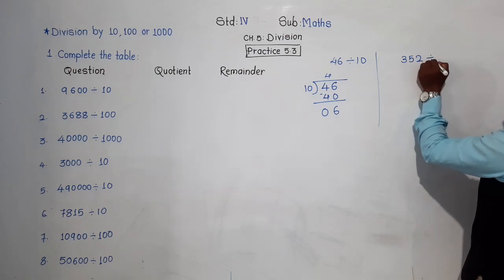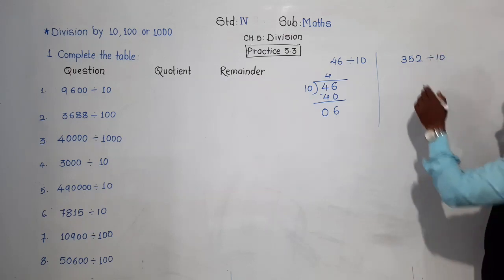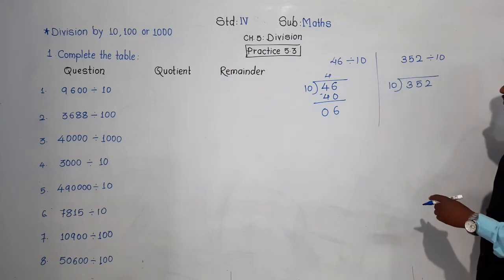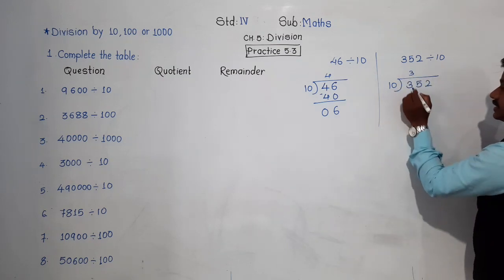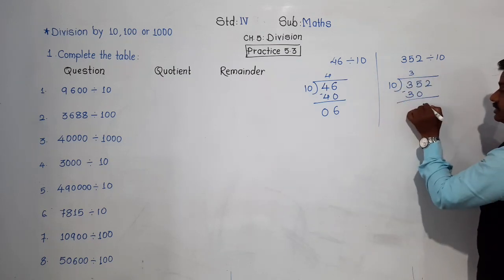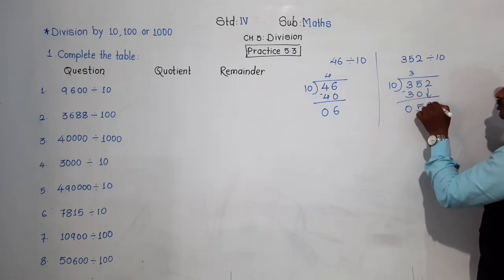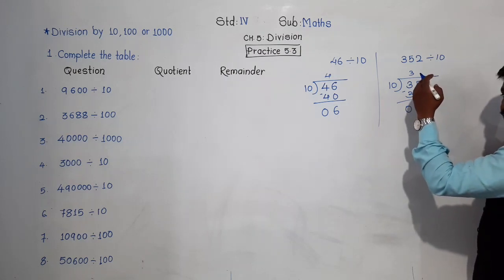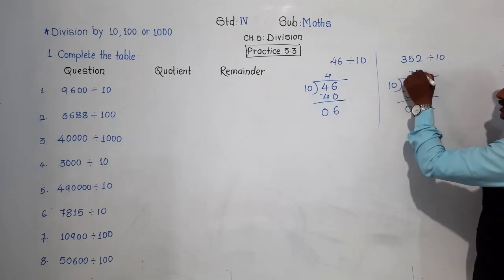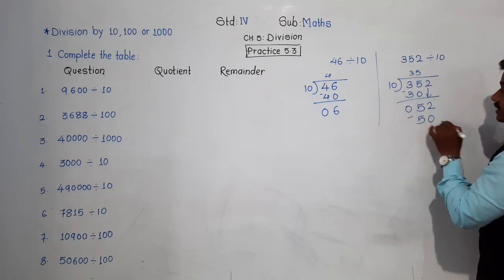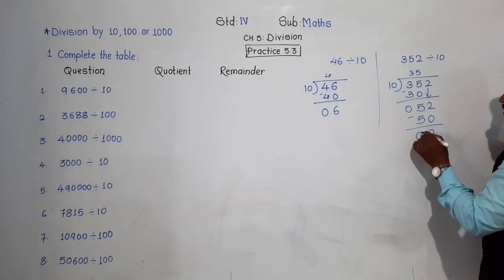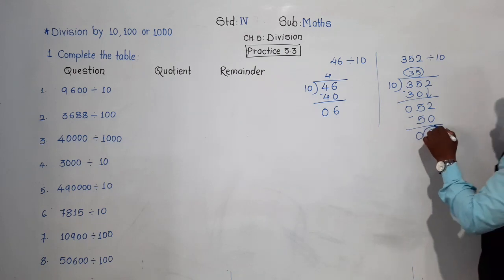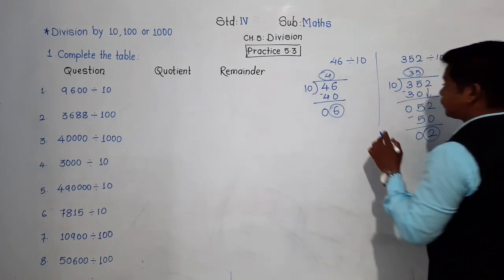Let's take another example: 352 divided by 10 using the traditional long division method. 10 threes are 30. Bringing digits down, we get quotient 35 and remainder 2. So here: quotient is 4, remainder is 6; quotient is 35, remainder is 2.